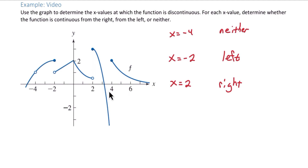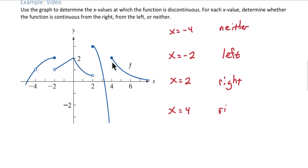Our next point of discontinuity is at 4. As you approach 4 from the left, the limit is going to negative infinity, but f of 4 is around 2, so it's not continuous from the left. As you approach 4 from the right, the value of the limit is approaching 2, and f of 4 is 2, so this is continuous from the right.